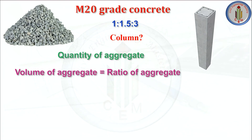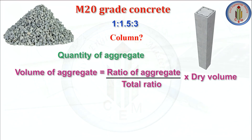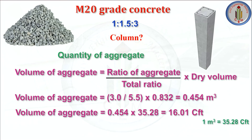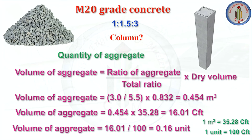Quantity of aggregate for the column: volume of aggregate equals ratio of aggregate divided by total ratio, multiplied by dry volume — 3 divided by 5.5 multiplied by 0.832 — giving 0.454 meter cube. Converting to CFT gives 16.01 CFT. Converting to unit, volume of aggregate is 0.16 unit.